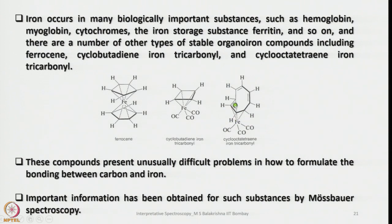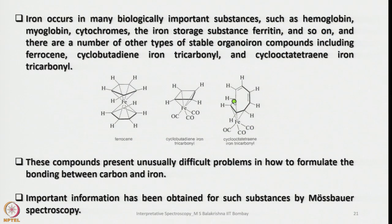For example, when cyclooctatetraene — which has 4 double bonds — reacts with iron, not all 4 double bonds can coordinate to the same metal due to the puckering nature of the ring. At most, η⁶ or η⁶ + η² coordination is possible. To get more insight into the internal structure, Mössbauer spectroscopy is quite helpful in iron compounds.